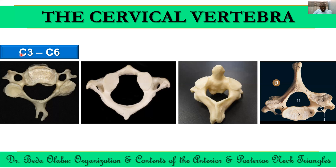The C3 to C6 vertebrae are termed the typical cervical vertebrae because of some things which are unique about them. One is that they have bifid spinous processes — this is typical for cervical vertebrae — with the exception of the C7 vertebra, which doesn't have a bifid spinous process, and the C1 vertebra, which has a posterior tubercle instead of the spinous process.